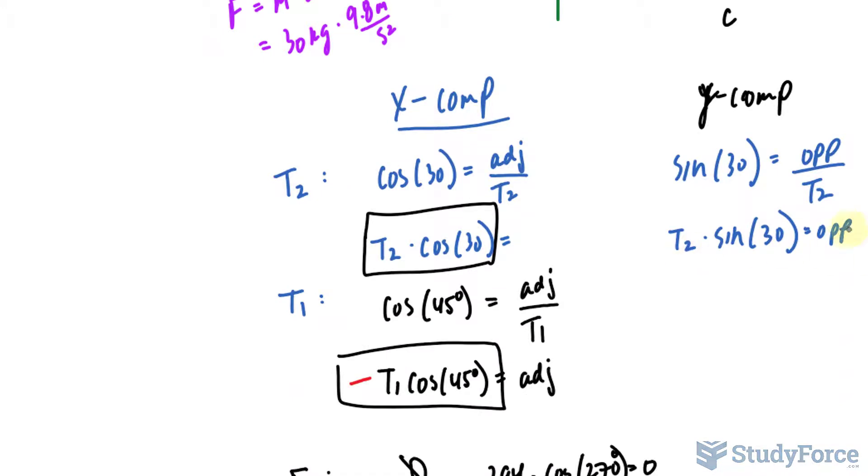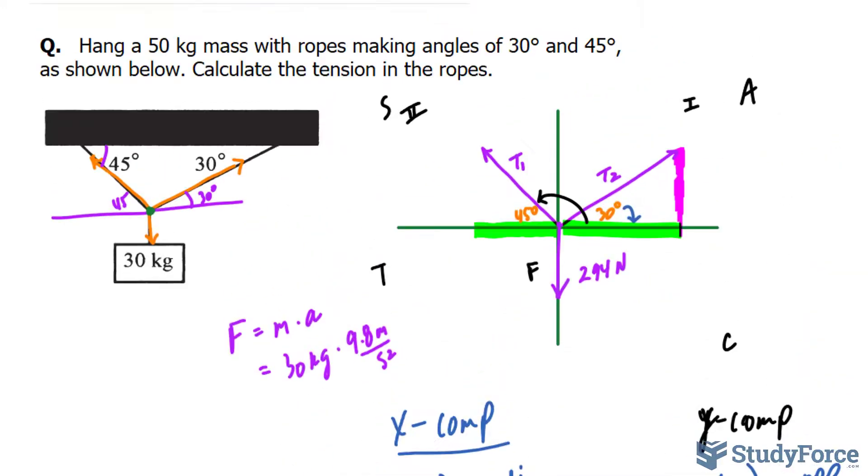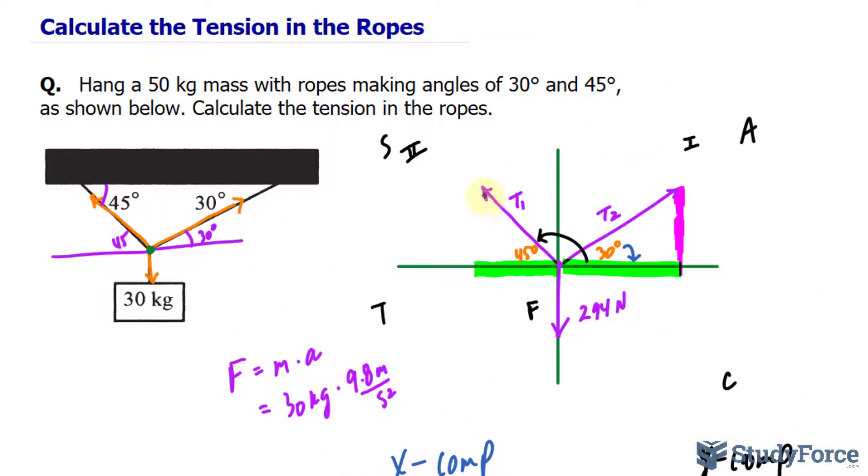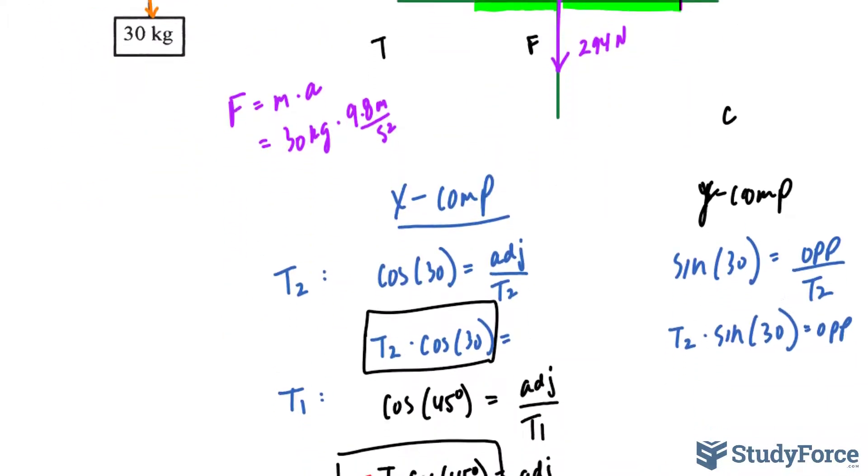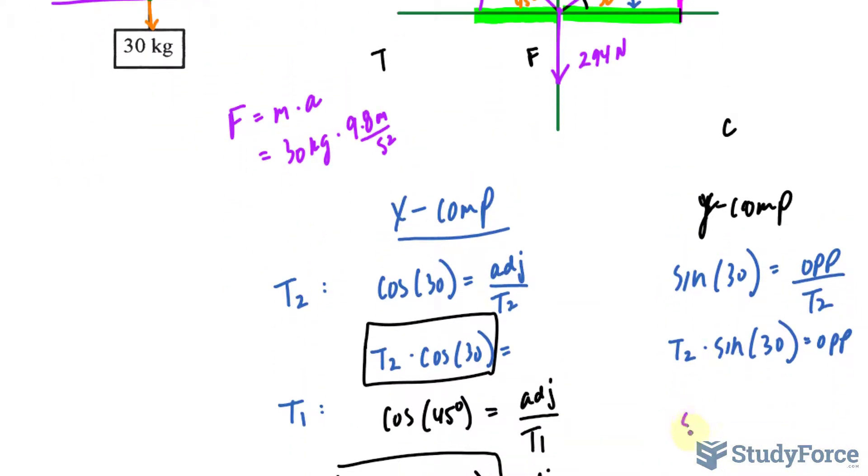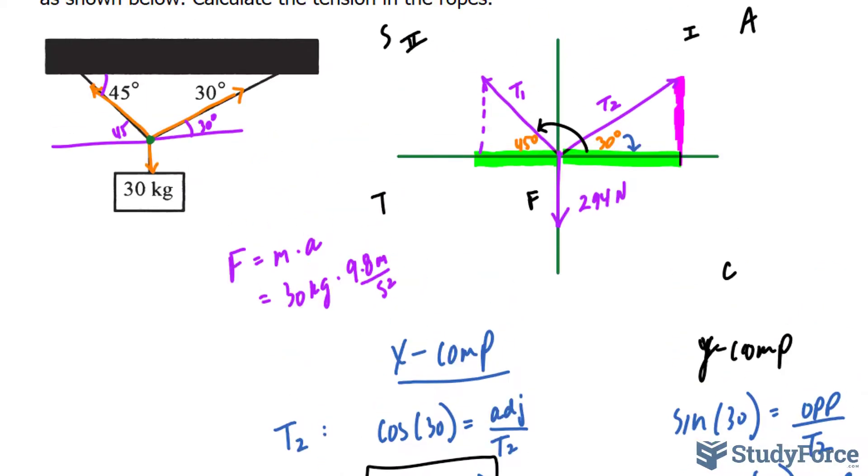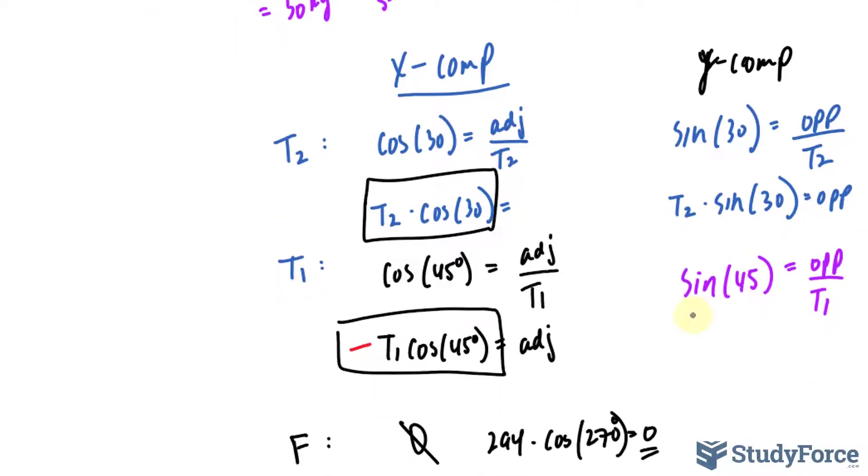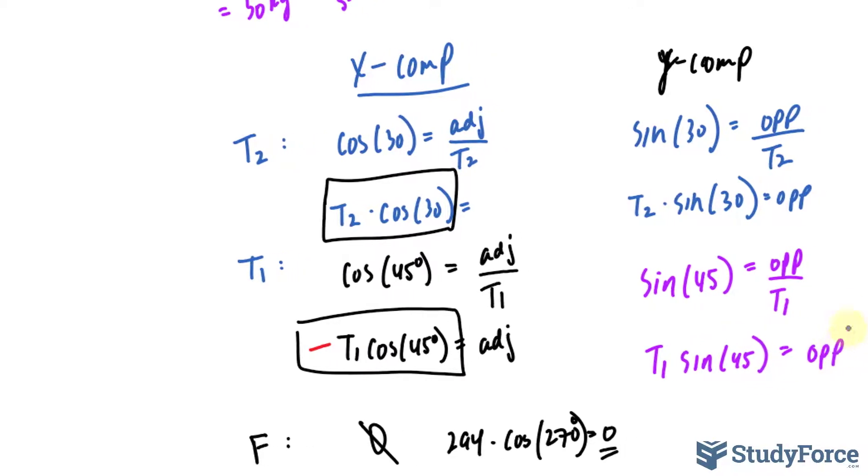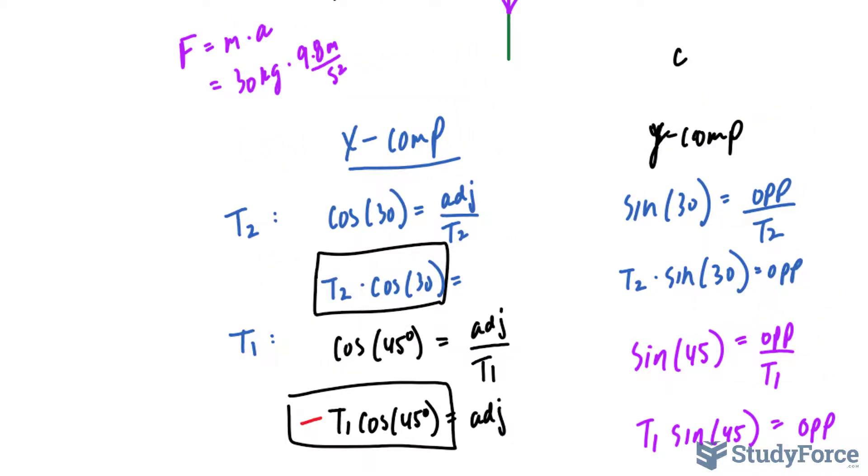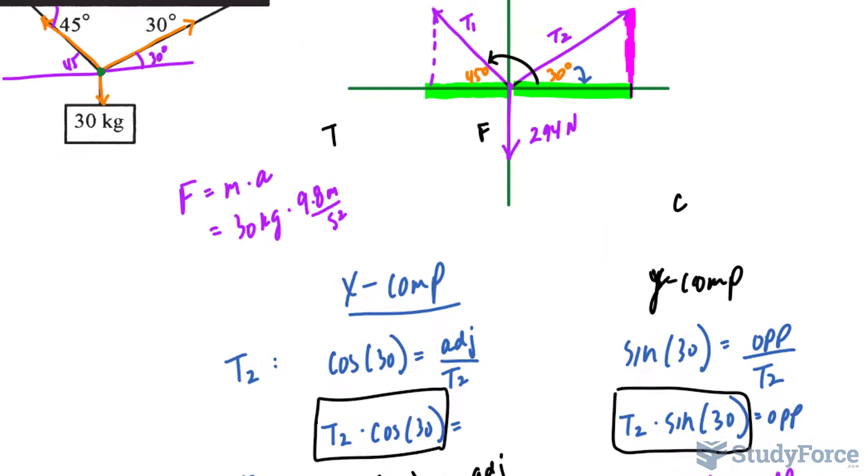When you're dealing with the y components, you're dealing with sine. Next, we'll get the y component for this part. We have sine at an angle of 45 degrees is equal to the opposite, and we're dealing with tension 1 now. So again, T1 sine 45 is equal to the opposite. Eventually, we will be adding this and this together, but we have one more y component to consider, which is the y component of vector F.